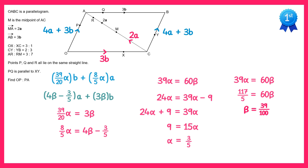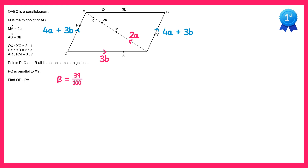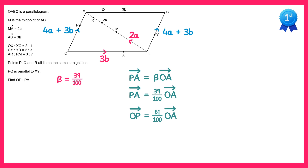Beta in particular helps us answer the question. When we initially defined beta, we said PA equals beta lots of OA. Now that we know beta, PA equals 39 over 100 of OA — meaning the line PA represents 39% of the line OA. The remaining part OP must therefore be 61 over 100 of OA, so OP equals 61 over 100 lots of OA. The question asked for the ratio of OP to PA, which is 61 to 39.